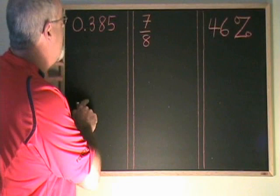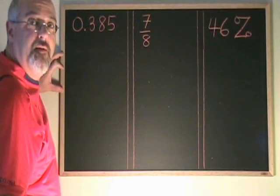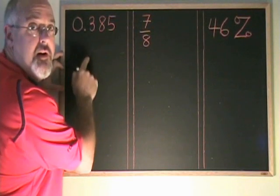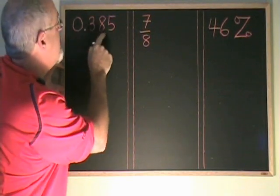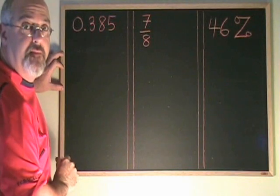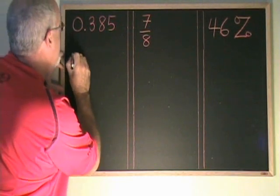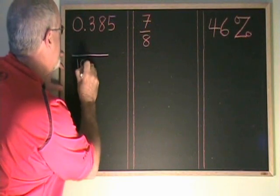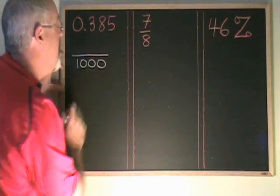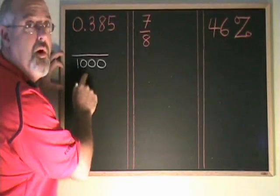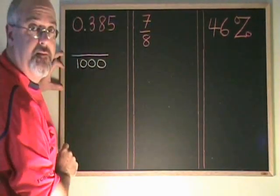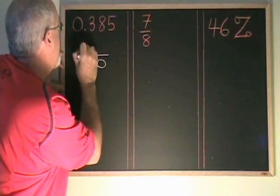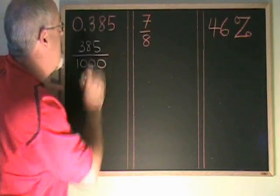First, let's convert 0.385 into a fraction. We count how many numbers we have after the decimal point, and we have three. So what we do is we make a big fraction line. We put a thousand on the bottom, a one with three zeros, one for each of these numbers, and then we put the number 385 on the top with no decimal.